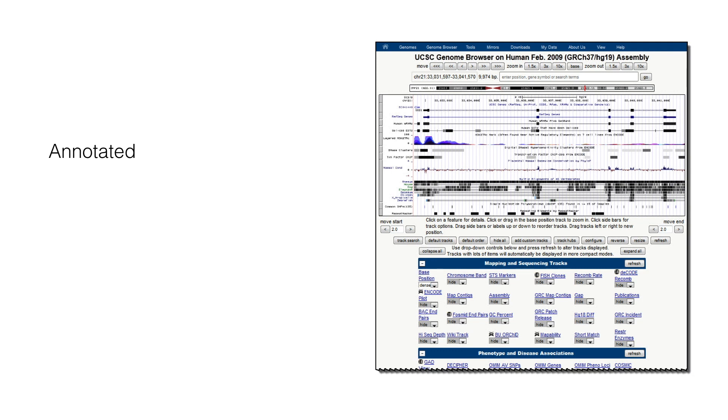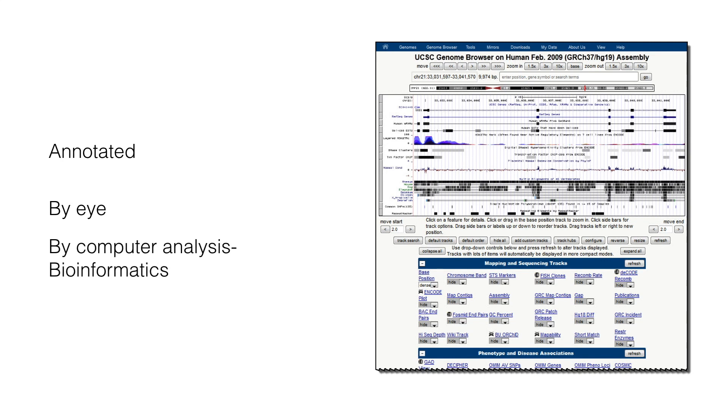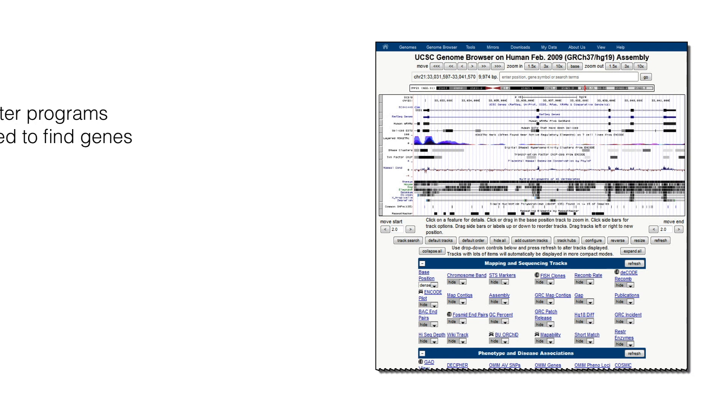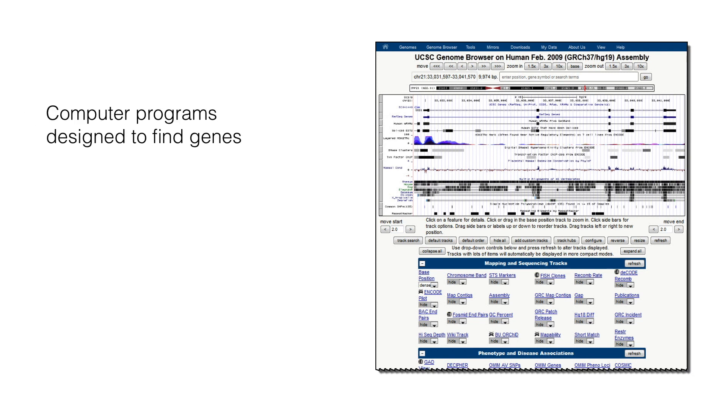After our genome is completely sequenced and assembled, it can then be annotated. We can locate features in the genome by eye, just by looking for patterns in the sequence. But we use computer experimental analysis, which is the domain of the science of bioinformatics. These operations are performed individually using computer programs designed to find genes.